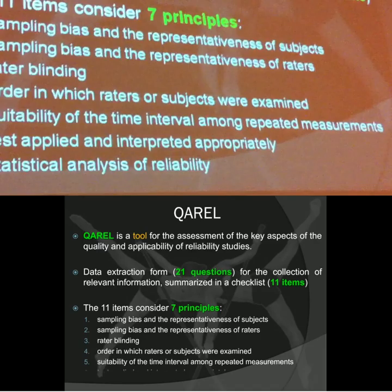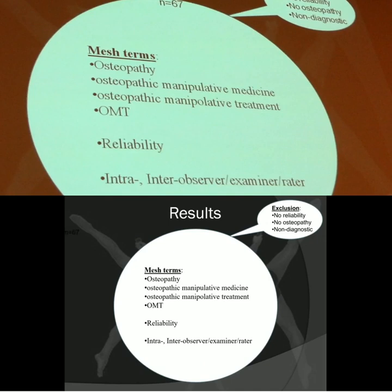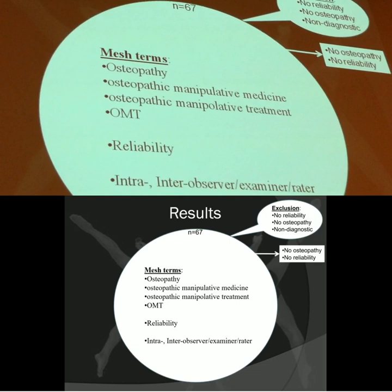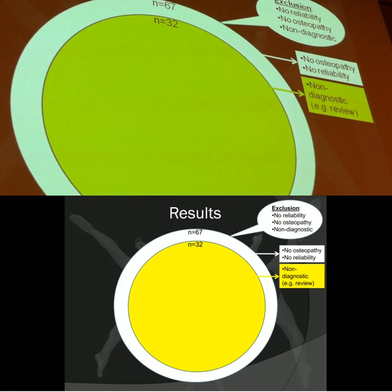Let me show you some results. That was the literature search. We applied the inclusion and exclusion criteria and found 67 studies. Then we checked properly and found some studies not really based on osteopathy and reliability, leaving us with 32 studies. After removing non-primary studies like reviews, we had 21 studies.